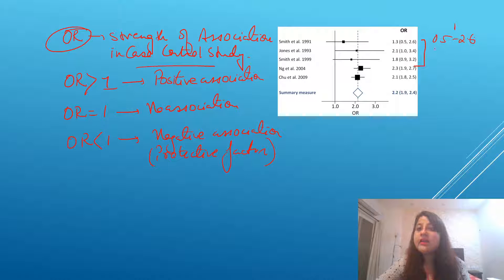If you say 0.5 to 2.6, one is coming over here. 0.1 to 3.4 me to one hai hi. 0.9 to 3.2, one is being included. That means whenever one is included, it simply means no association.